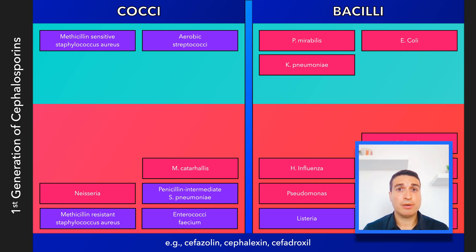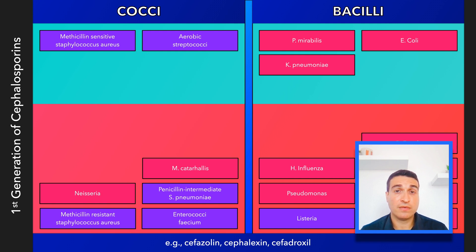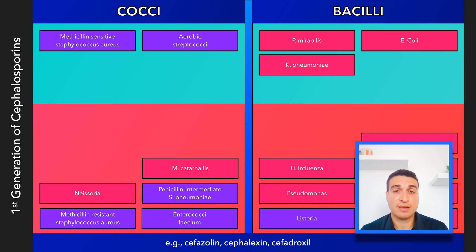Don't worry about memorizing these details — the last slide will summarize this lecture on a single flashcard. For now, just follow along and let important concepts slowly sink in. For example, cephalexin can be used to treat uncomplicated skin infections, much in the same way as an antistaphylococcal penicillin. Cefazolin is commonly used for perioperative prophylaxis. And when an organism is susceptible, first-generation cephalosporins can be used to treat infections due to gram-negative enterics, like a simple UTI.